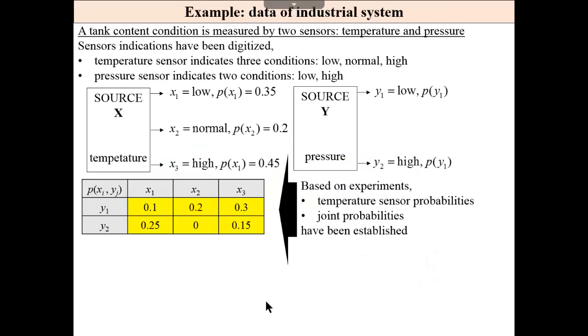An example: data of industrial system tank. And we have two sensors. One sensor is a temperature sensor. We have three levels: low, normal, and high. Three messages as output of this source. Of course, the second source is pressure. And we have only low and high pressure indication. And based on experiments, we have temperature sensor probabilities, these probabilities, and also joint probabilities.